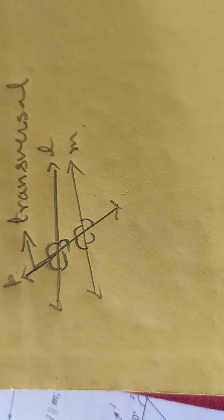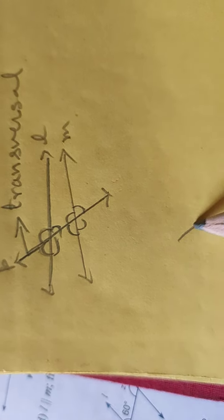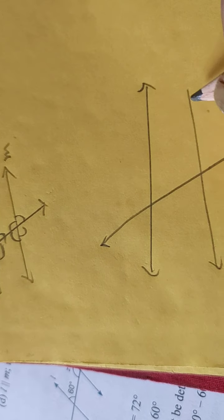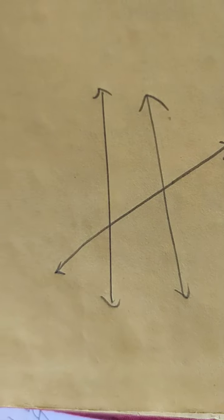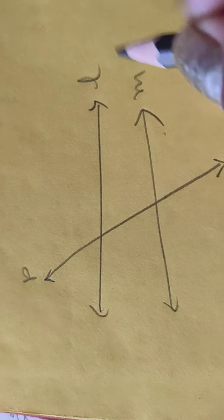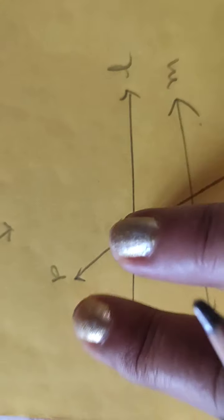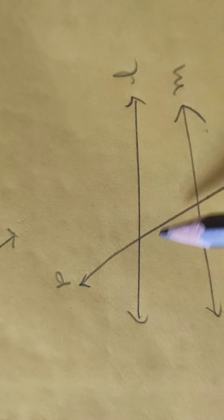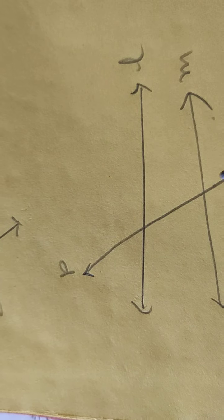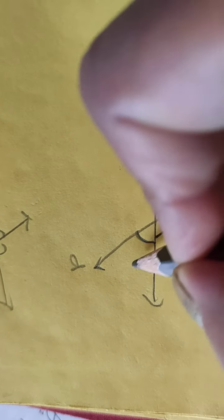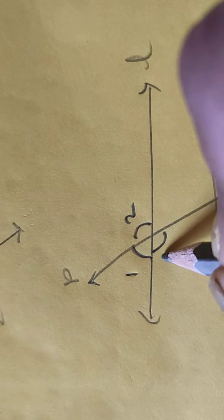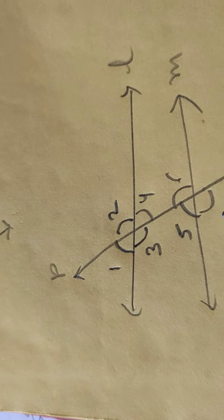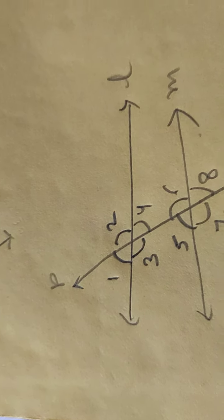I'll draw a bigger figure so that you understand. So this is the P transversal, line L, line M. The P transversal is cutting two lines L and M. Now, what are the angles made? I'm first marking the angles: one, two, three, four, five, six, seven and eight. These are the angles marked.